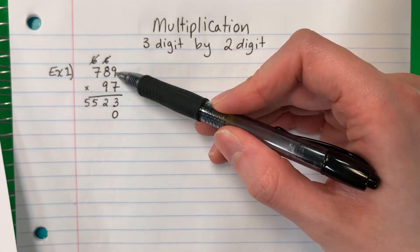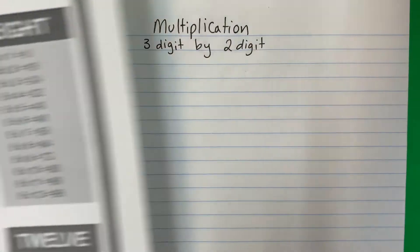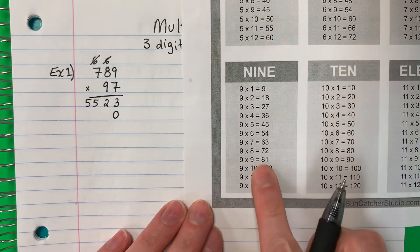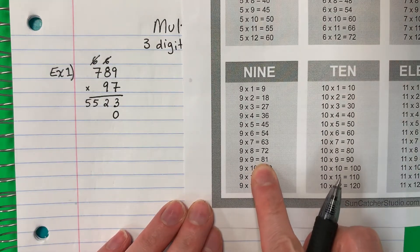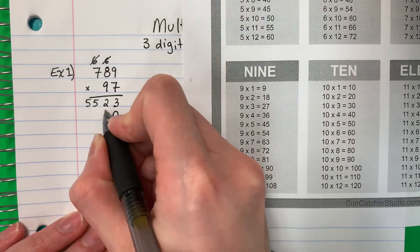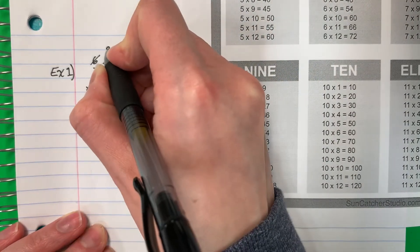Nine times nine. Nueve por nueve. Nine times nine is eighty-one. Ochenta y uno. You put the one here. Uno. And then you put the eight.